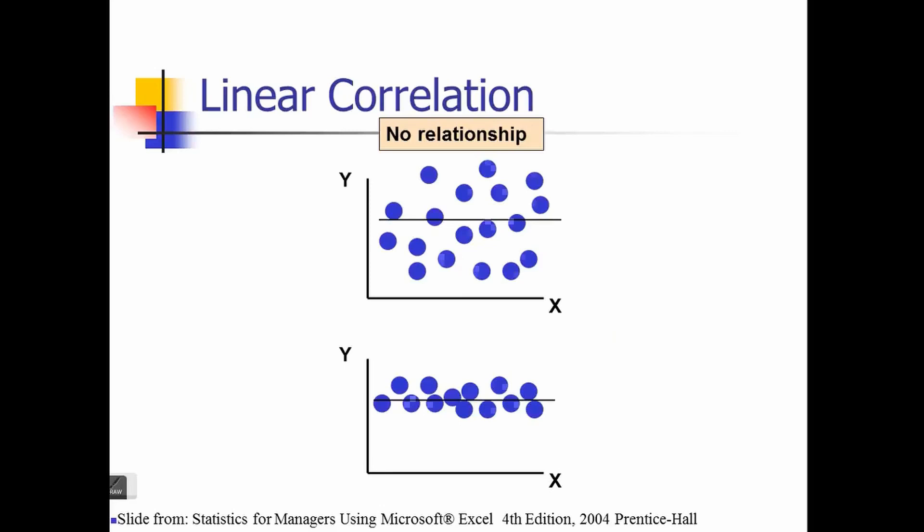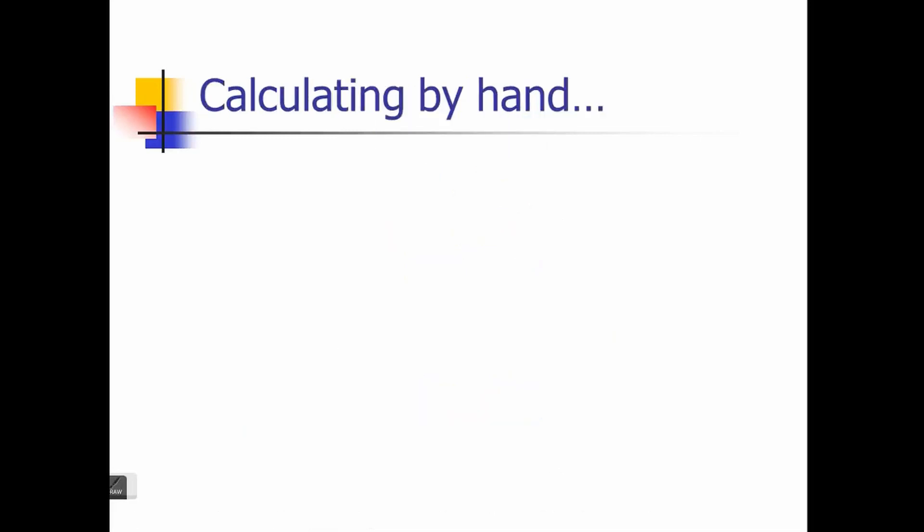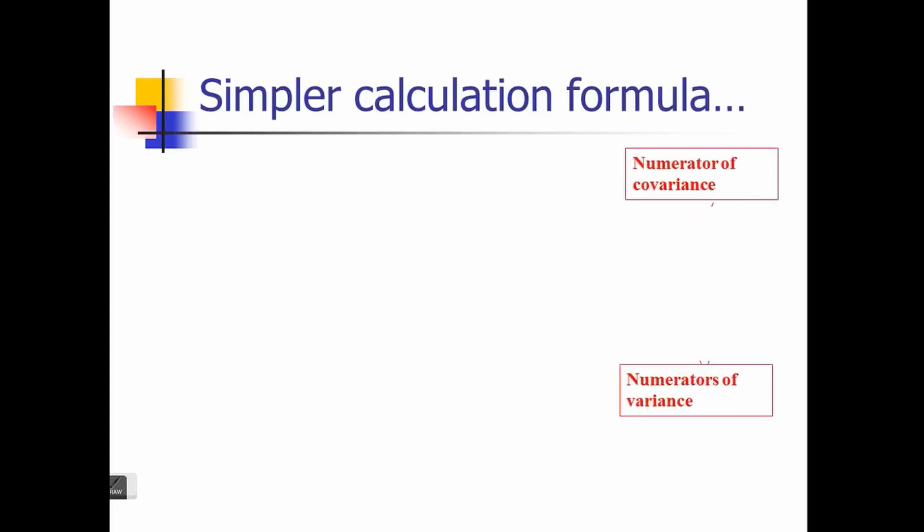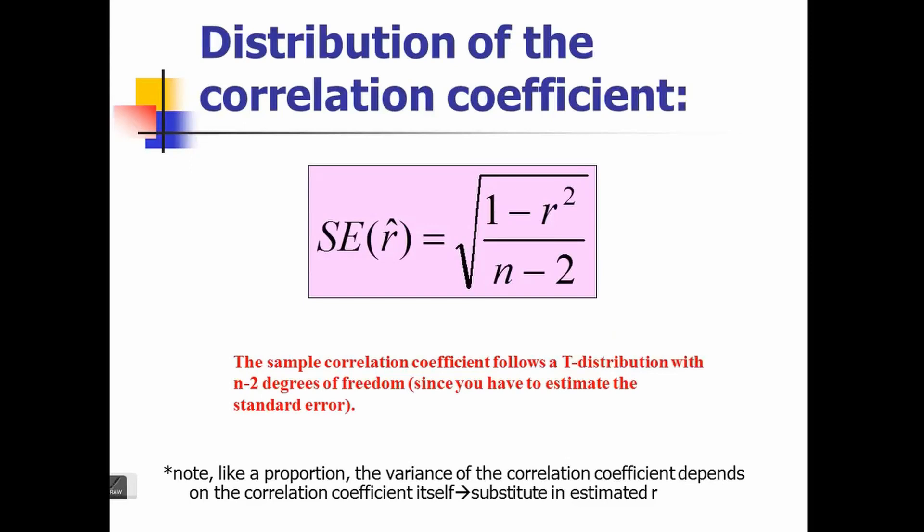We can calculate correlations using a formula, though most modern software has their own function that can calculate the correlation for us. We can certainly calculate it ourselves using the formula as well. You can also have a distribution of a correlation with a standard error, and we'll talk more about what the standard error is and how it helps us later in this lecture.